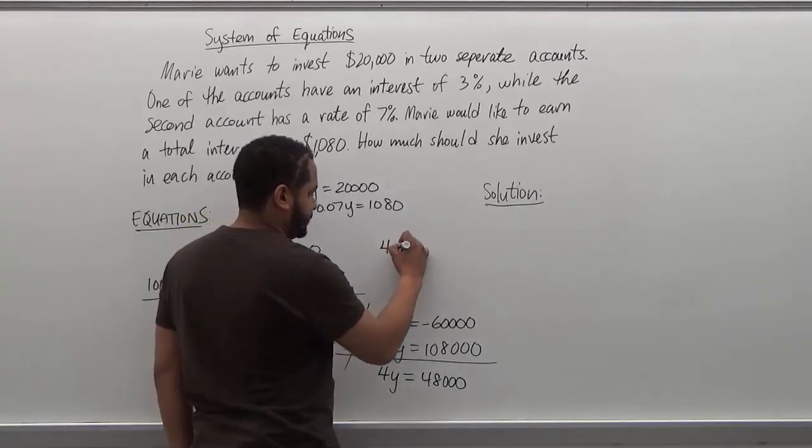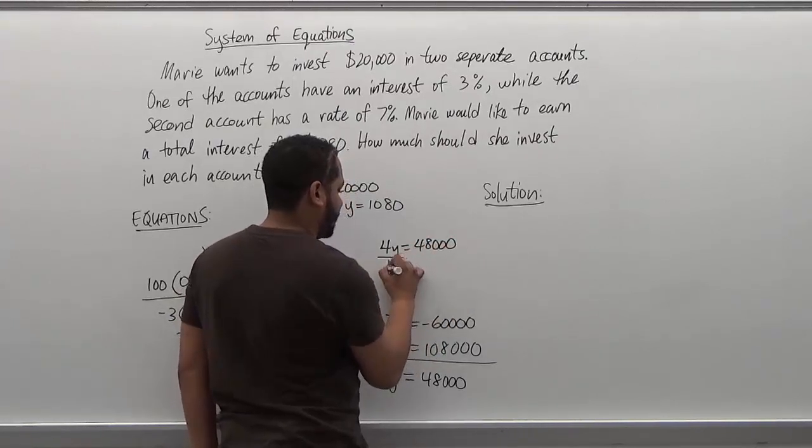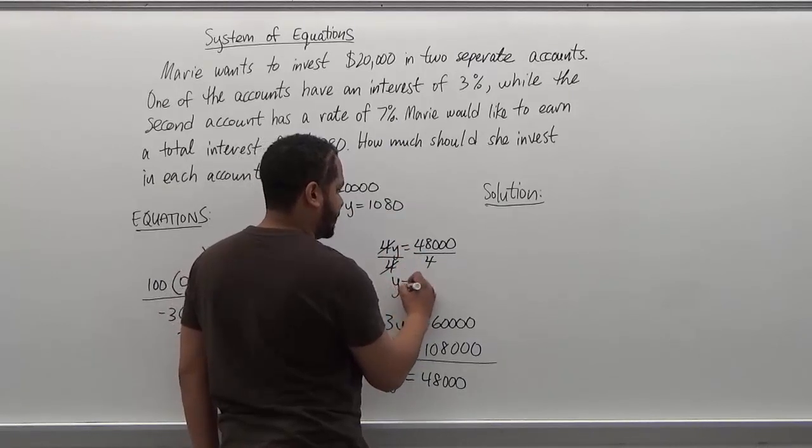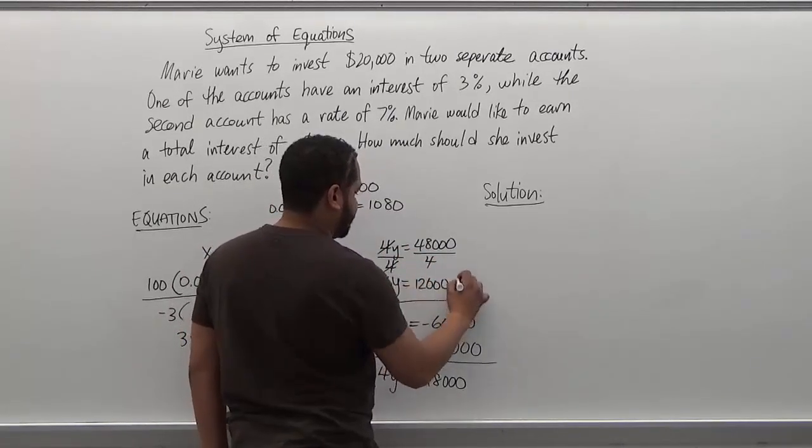Now we're going to take the 4y and divide the 48,000 to get the value of y. So we're dividing by four to both sides. The fours go away. Y is equivalent to 12,000. So we have the y value.